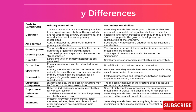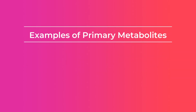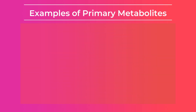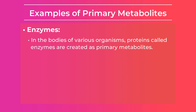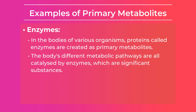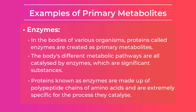Now let's dive into the examples of primary metabolites, starting with enzymes. In the bodies of various organisms, proteins called enzymes are created as primary metabolites. The body's different metabolic pathways are catalyzed by enzymes, which are specific substances. Proteins known as enzymes are made up of polypeptide chains of amino acids and are extremely specific for the process they catalyze.